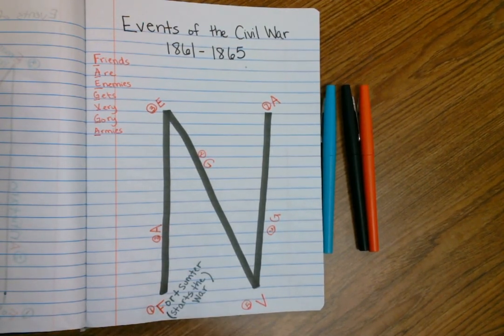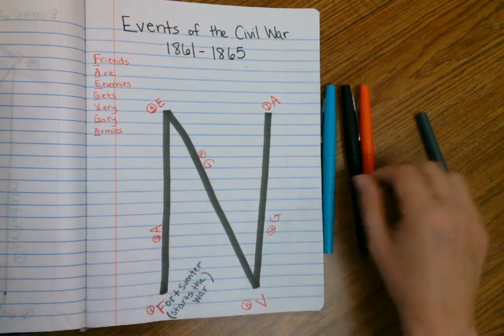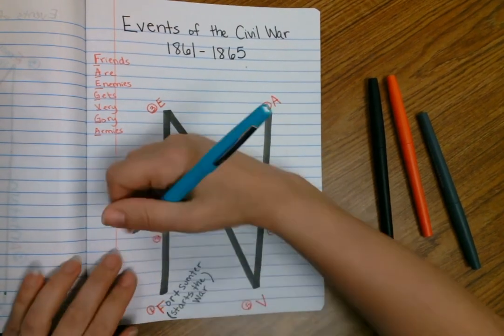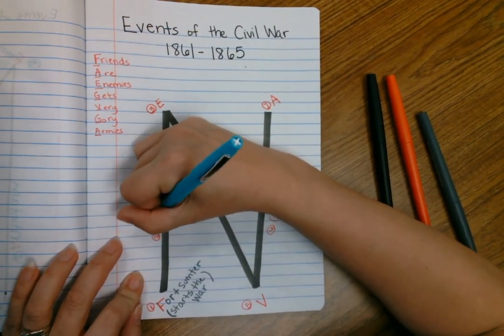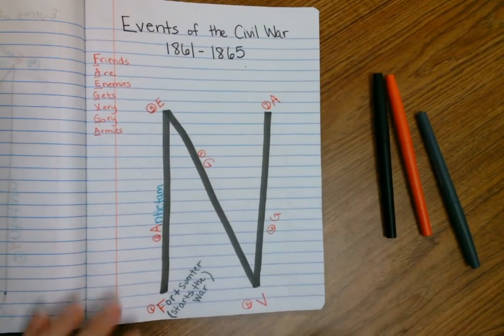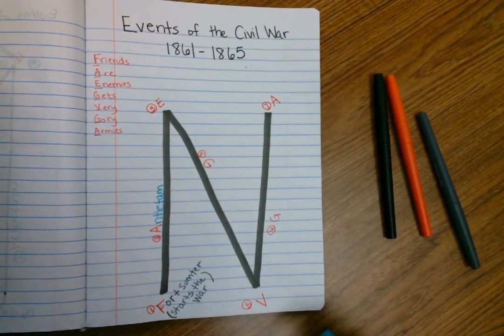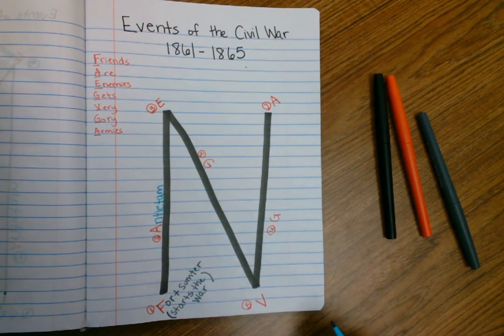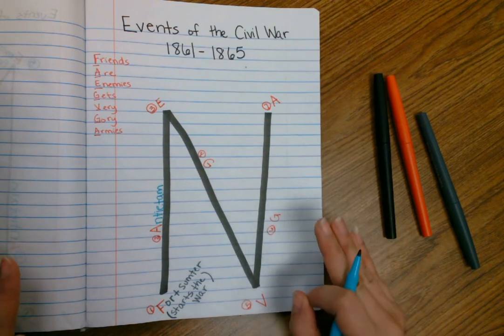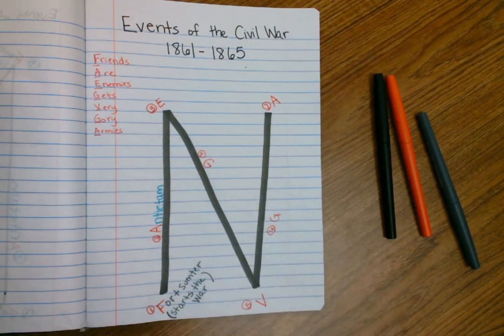We then get the Battle of Bull Run, which is the first official battle, but we really need to know this A. This A, and I'm going to go with blue, is going to be the Battle of Antietam. The Battle of Antietam is the bloodiest 24 hours in American history.